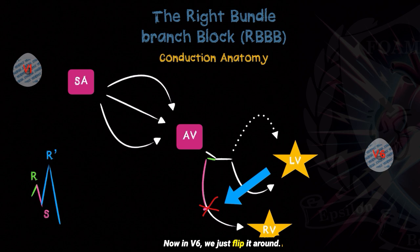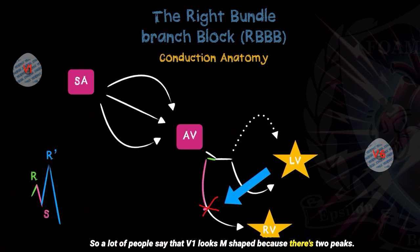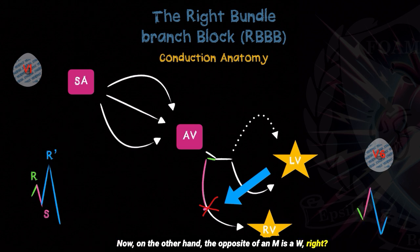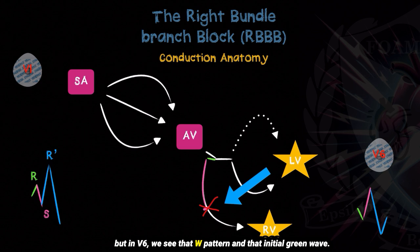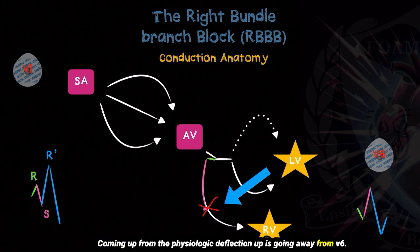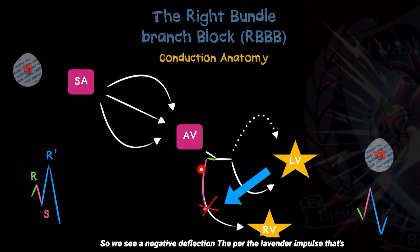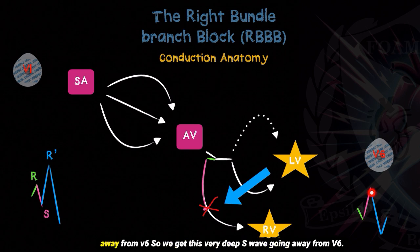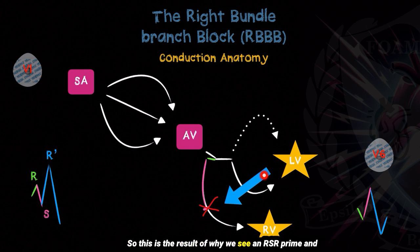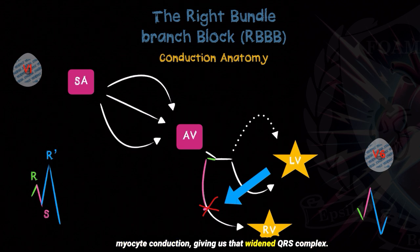In V6, we just flip it around. A lot of people say that V1 looks M-shaped because there are two peaks. The opposite of an M is a W, and so we get a W pattern in V6. The initial physiologic deflection upward is going away from V6, so we see a negative deflection. The impulse coming down the left ventricle toward V6 gives us a positive deflection. Then the left-to-right myocyte-to-myocyte conduction is going away from V6, giving us that very deep S wave. This explains why we see the RSR prime and a deep S wave, along with the widened QRS complex.